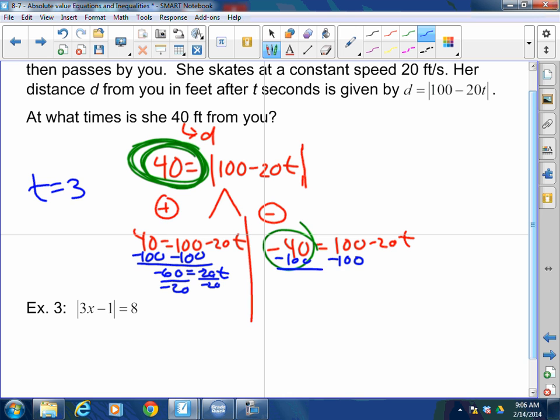Then here, subtract the 100. -140 = -20t. Divide by the negative 20. t = 7. So she will be 40 feet from you after 3 seconds and after 7 seconds.